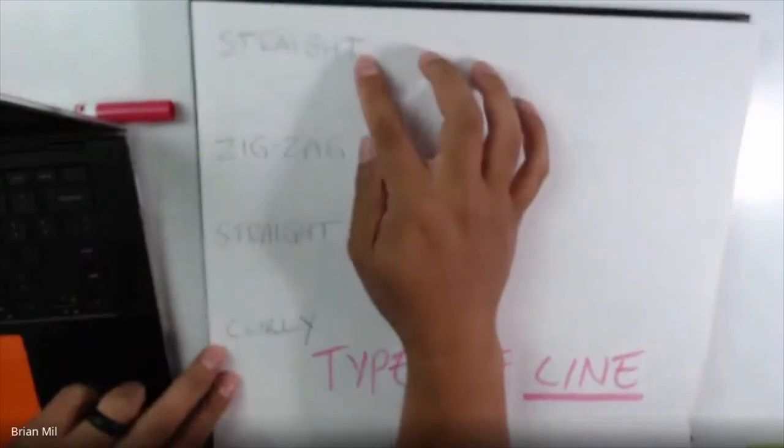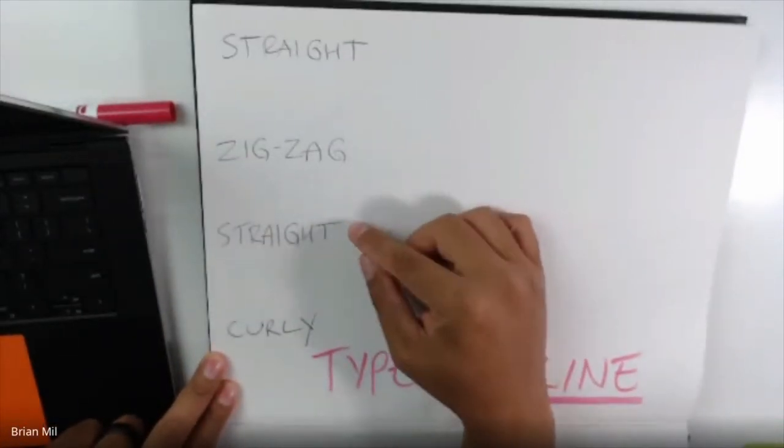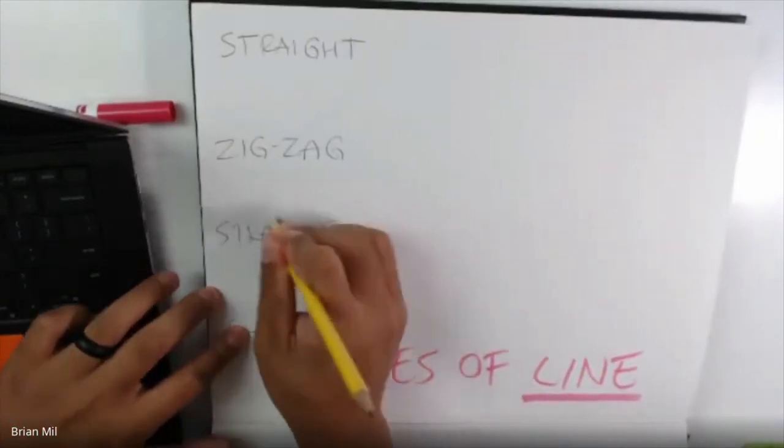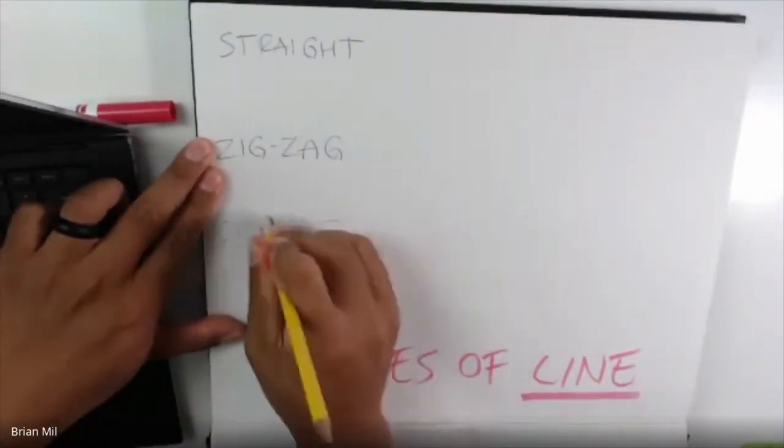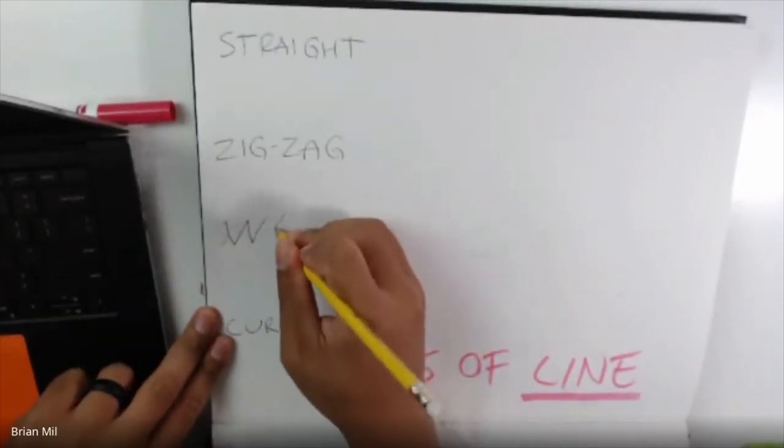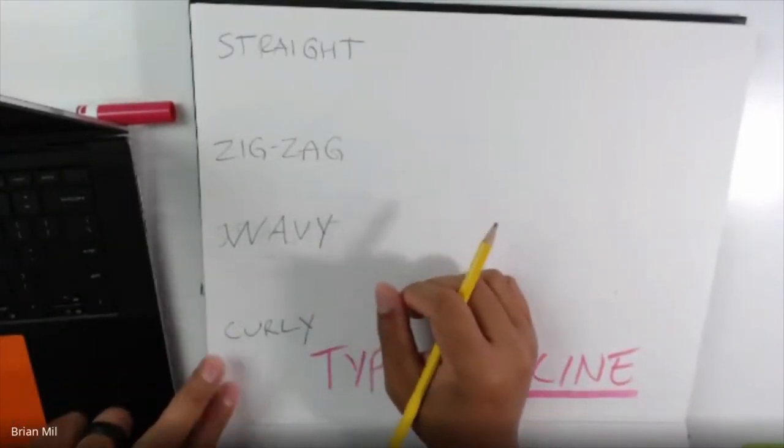And line is one of the seven elements of art. So we're just going to go over this real quick. So the first type of line is called straight, then we have zigzag, then we have, oh, Mr. Mill messed up. This one should say wavy, I'm sorry. And then we also have the word curly.